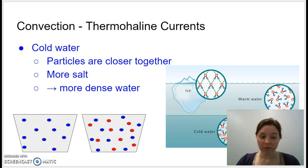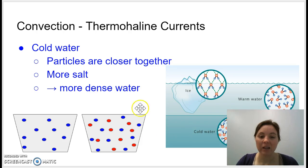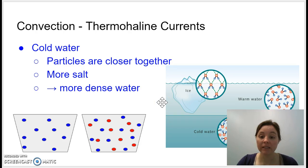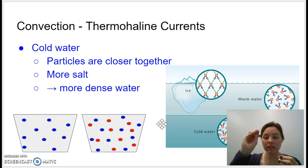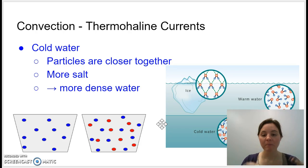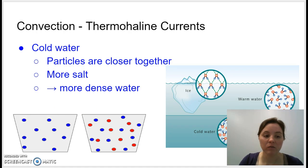Cold water particles are not moving very much, so they're very close together and there are more water molecules per unit of volume. Cold water also has more salt in it because when ice freezes it leaves behind the salt — only fresh water forms ice, so you have a higher concentration of salt molecules. So you have really cold, really salty water with lots of particles per unit volume, making that water super dense, and dense things sink.